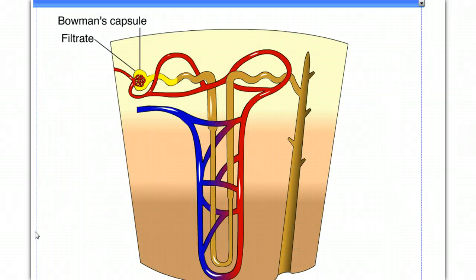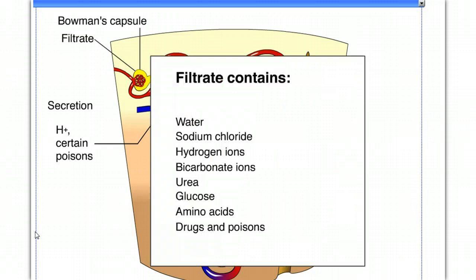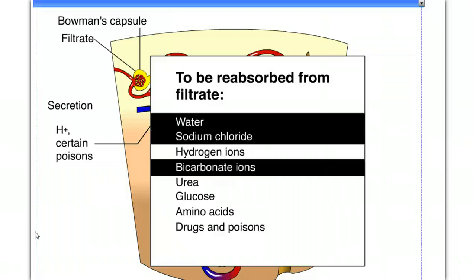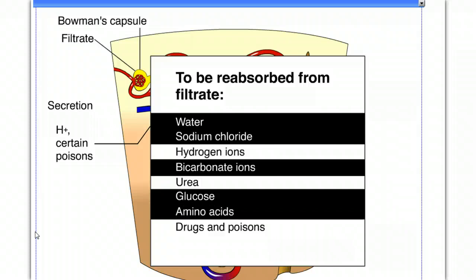As the filtrate moves along the proximal tubule, certain substances are transported from the blood and added to the filtrate, a process called secretion. Secretion of hydrogen ions helps to regulate body pH. Certain poisons are also secreted to remove them from the blood. This list summarizes substances contained in the filtrate. Filtration is not selective, so some of these substances are useful to the body, and it is important that they be returned to the blood. The kidneys generally need to recover water, sodium chloride, bicarbonate ions, and nutrients such as glucose and amino acids. This reclamation of valuable solutes in water is called reabsorption.